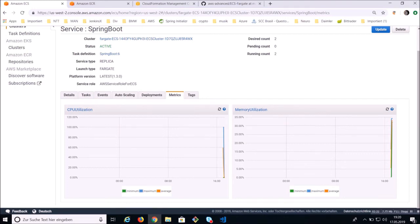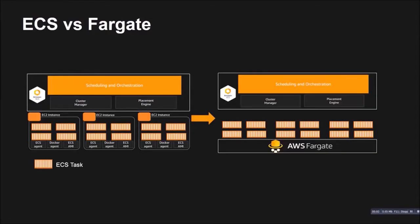Let's look at the differences between ECS and Fargate. In classical ECS you define a real cluster with EC2 instances — for example three instances — each running an ECS-optimized machine image, an ECS agent, and a Docker agent, with your tasks running on those EC2 instances. In Fargate, this is serverless — at least from your perspective. You don't define EC2 instances, you don't define cluster size, and you don't create scaling policies and triggers for your cluster — only for your tasks.